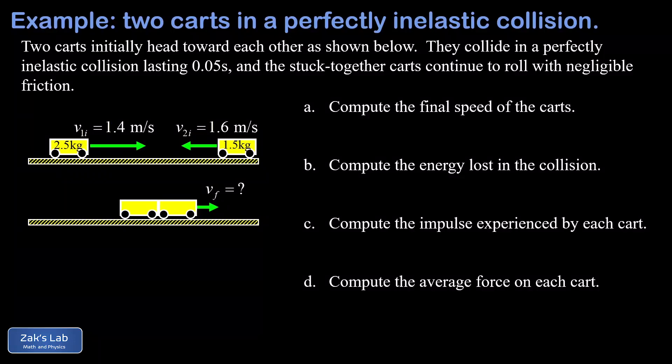In this video we're solving a perfectly inelastic collision between two carts. We're given the masses of these carts and the initial velocities. They happen to be aiming at each other in the initial state for the system, and we're answering a whole list of questions here. We're going to start by finding the final velocity of these carts after they're stuck together.